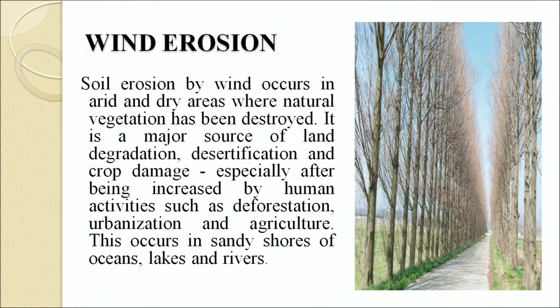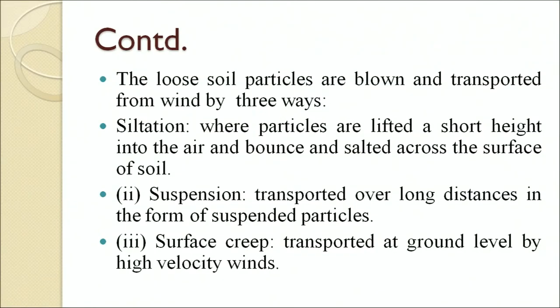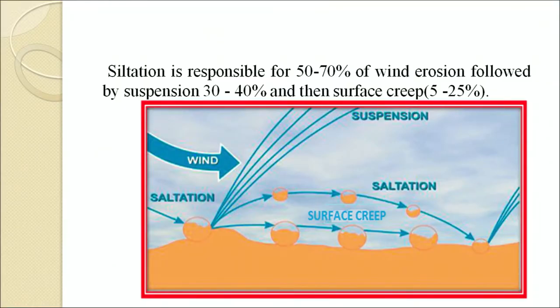Soil erosion by wind occurs in arid and dry areas where natural vegetation has been destroyed. It is a major source of land degradation, desertification and crop damage, especially after being increased by human activities such as deforestation and urbanization. Wind erosion occurs in sandy shores of oceans, lakes and rivers. The loose particles are blown and transported by wind in three ways: saltation, where particles are lifted a short height and bounce across the soil surface; suspension, where particles are transported over long distances; and surface creep, where particles are transported at ground level by high-velocity wind. Saltation is responsible for 50–70 percent of wind erosion, suspension for 30–40 percent, and surface creep for 5–25 percent.